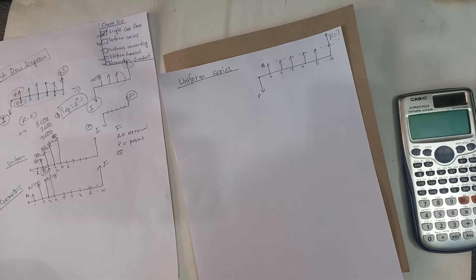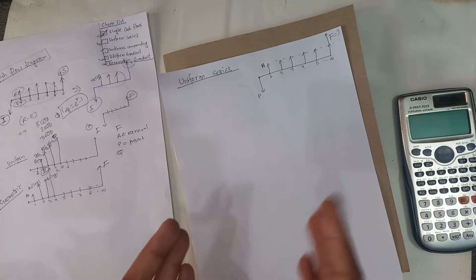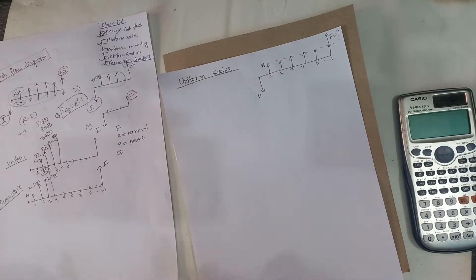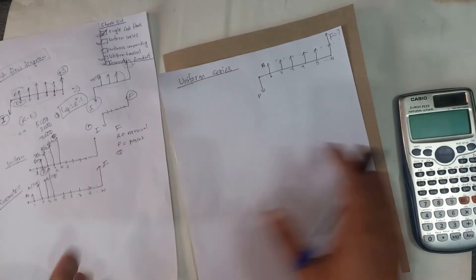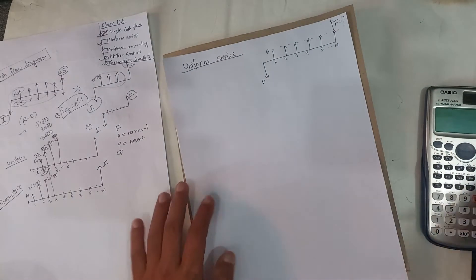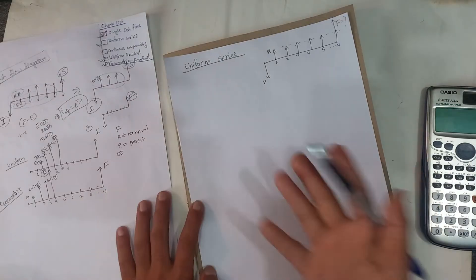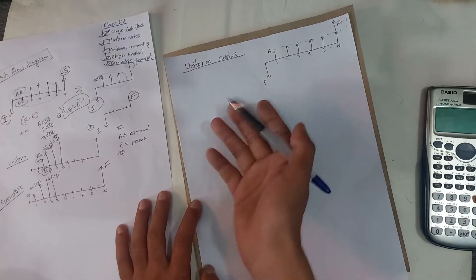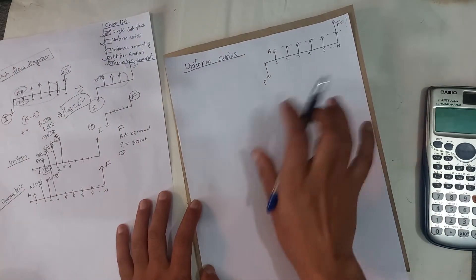Welcome back! This is a uniform series. It is called annuity. Each period in this period is repeated. This amount of cash flow is simple. It is called present worth.